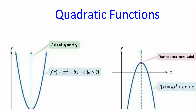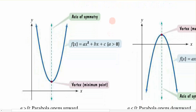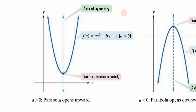Before we begin our graphing, we want to remember what a quadratic function looks like and what the characteristics of it are. Our quadratic function is given as ax squared plus bx plus c — this is the general form of a quadratic function. You know it's quadratic simply because the variable x is raised to the highest power of 2.